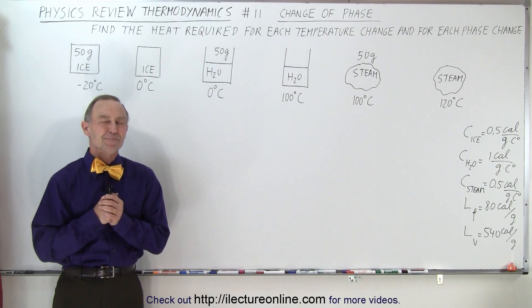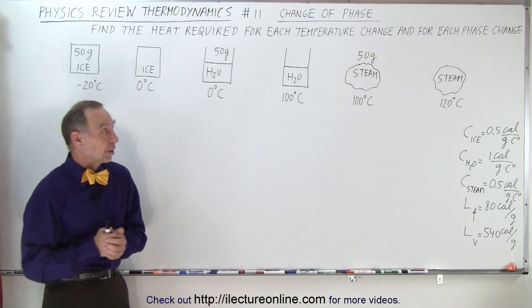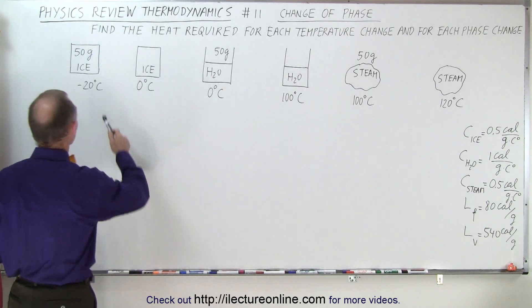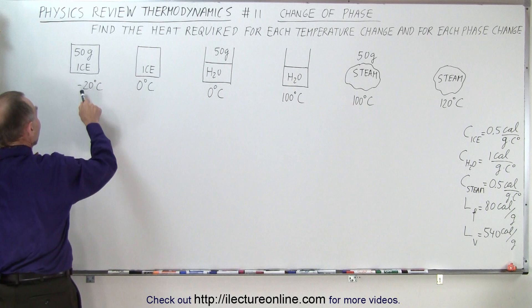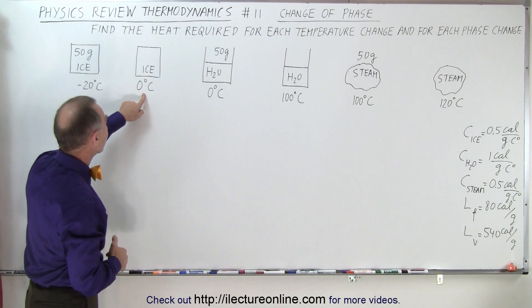Welcome to our lecture online. Now let's take a look at phase changes as well. Let's say that we start out with a clump of ice, 50 grams, at minus 20 degrees Celsius.